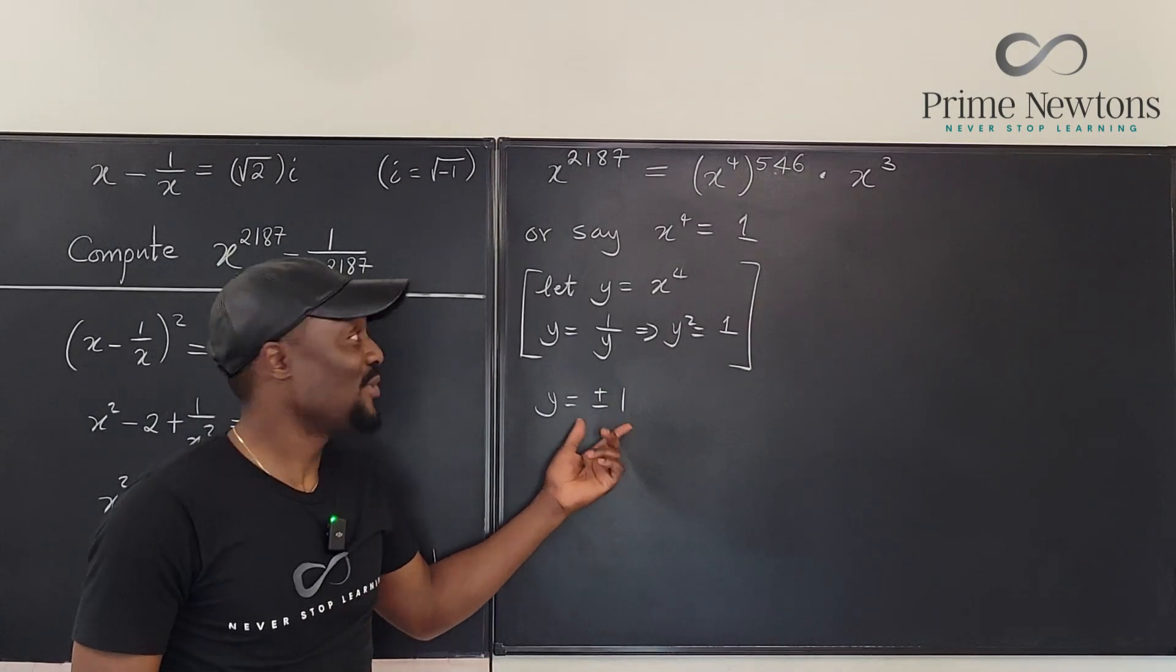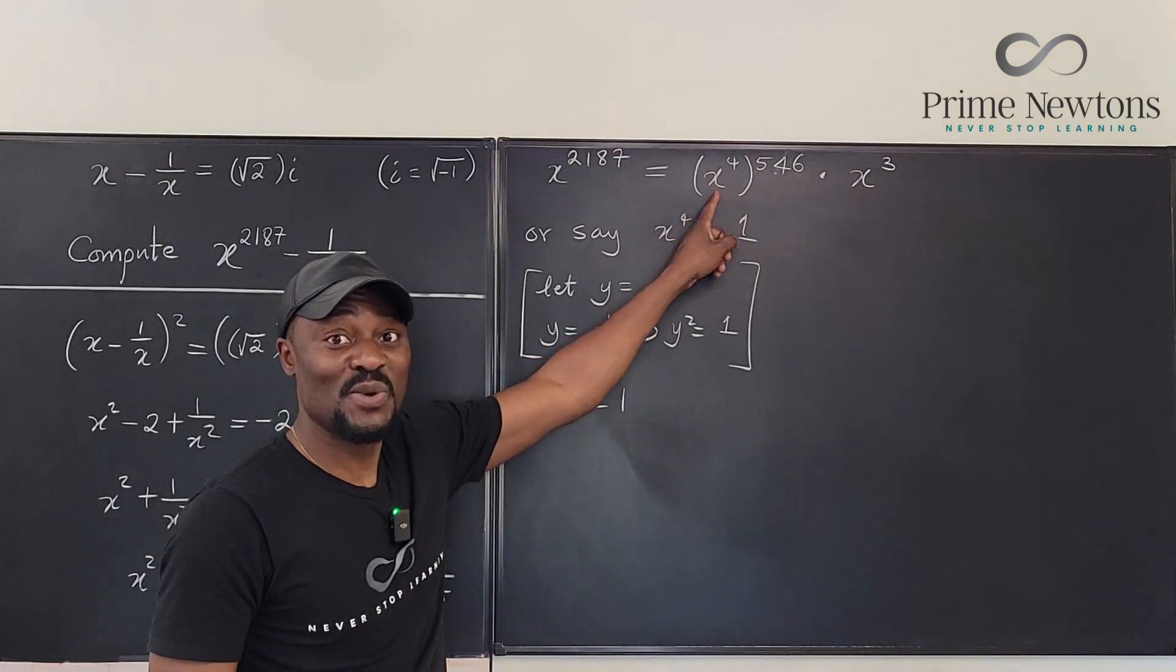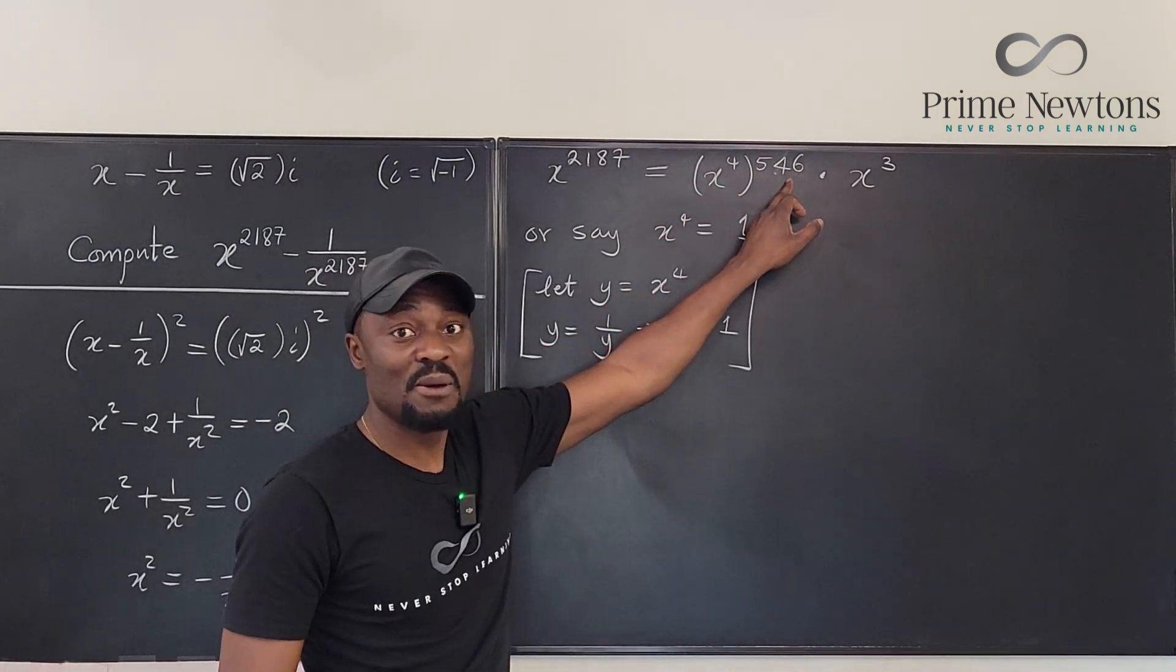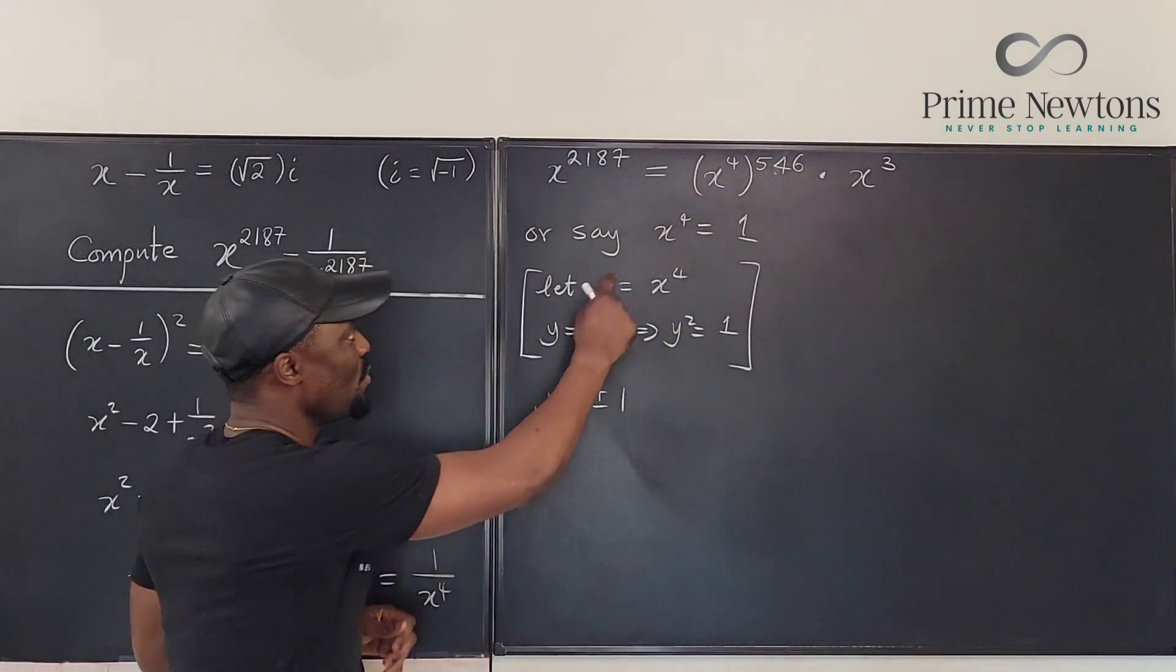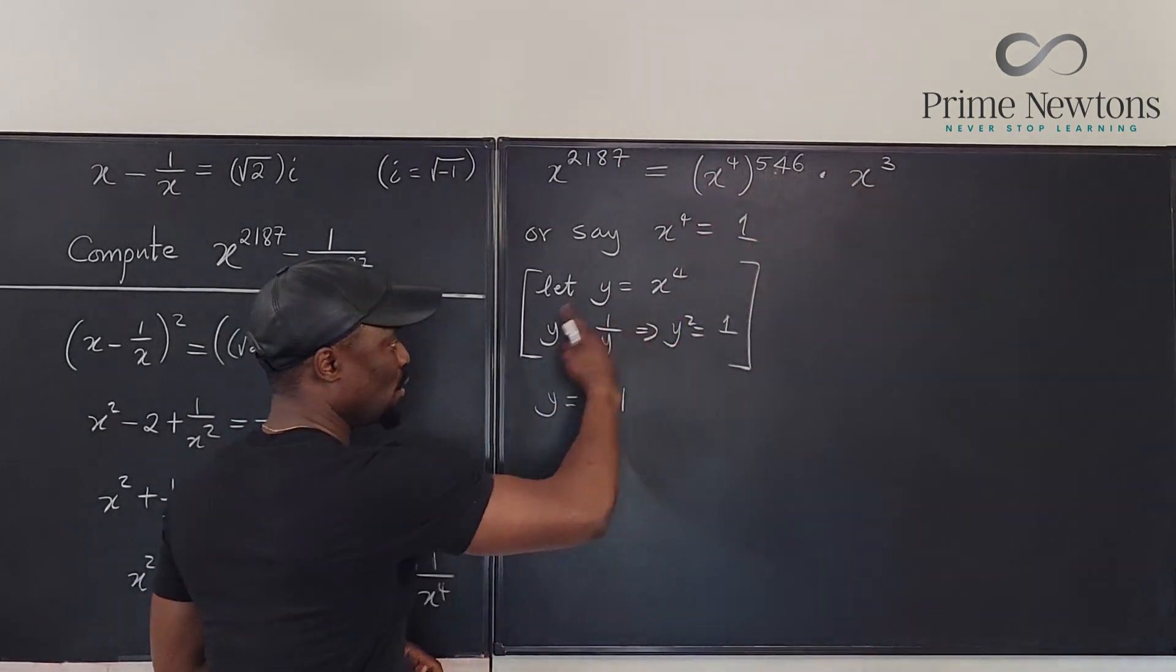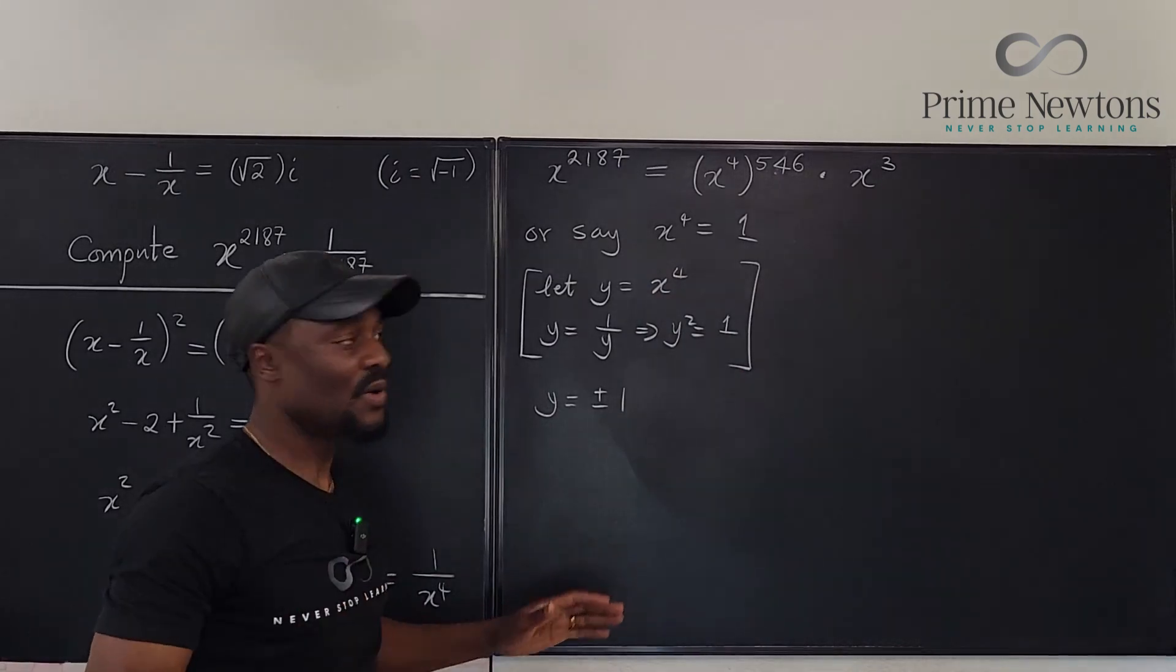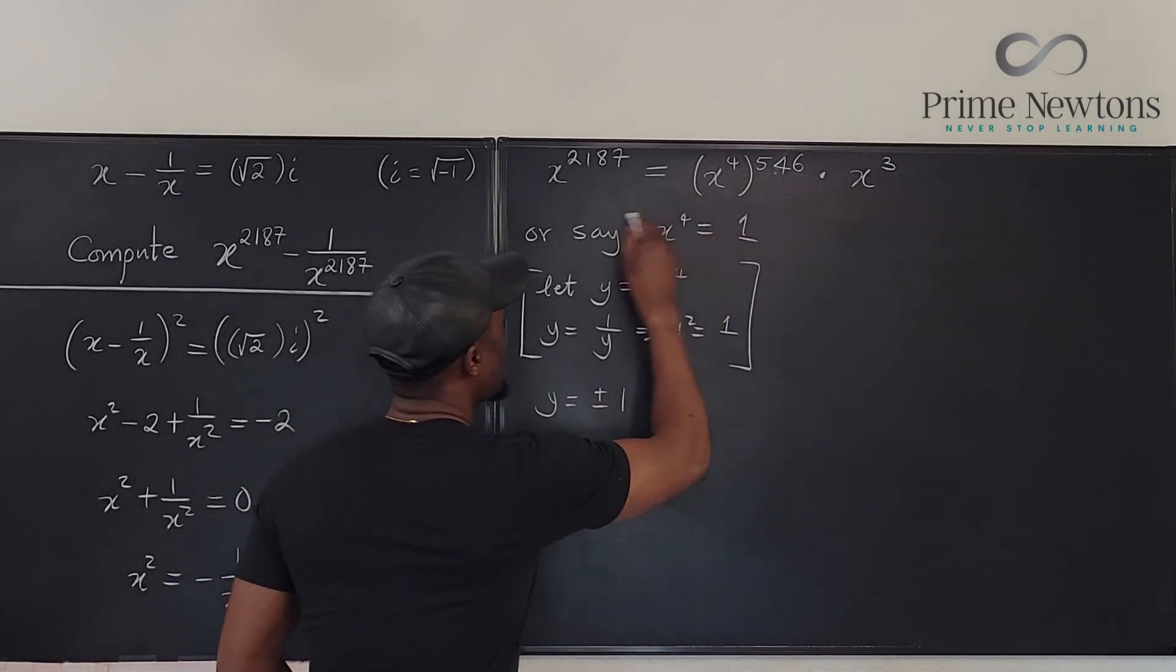Which means that y will be equal to plus or minus 1. So we can say y is plus or minus 1. It doesn't matter whether it's plus or minus 1, because if you plug in plus or minus 1 here raised to an even number, this is still going to be 1. So whether you just go this way or you show it this way, one thing we know is that x to the fourth is equal to 1.